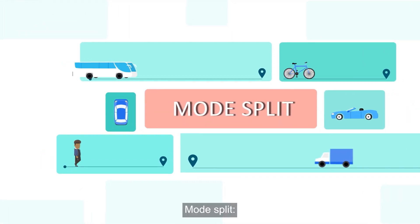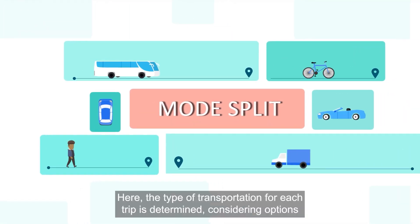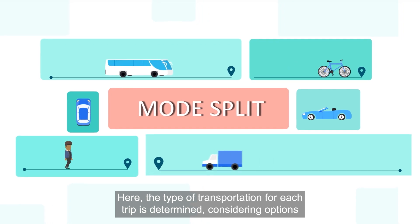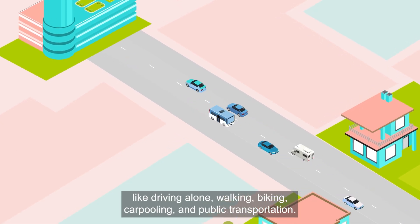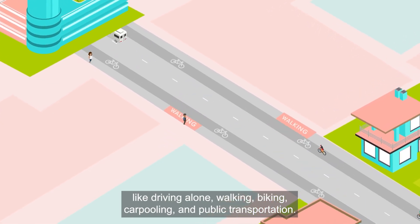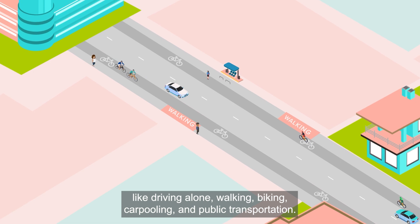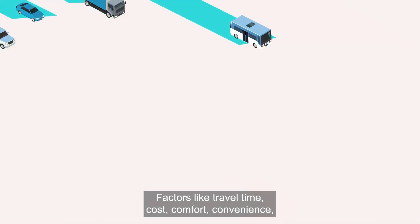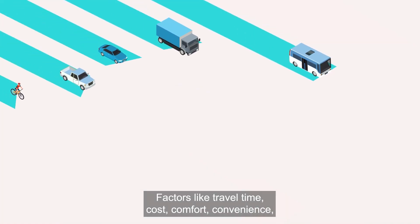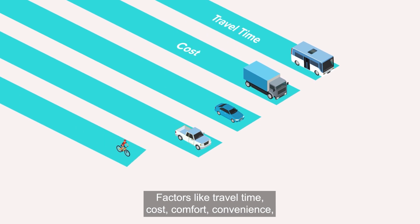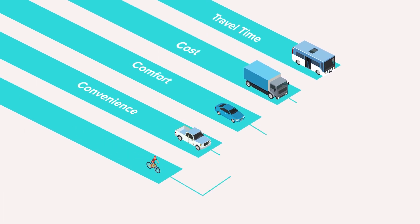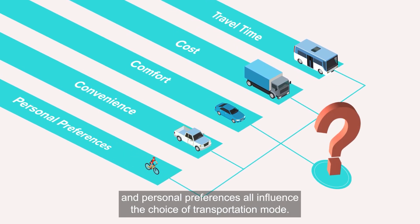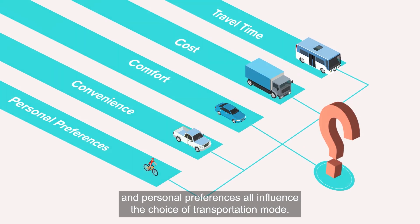Mode split: here, the type of transportation for each trip is determined, considering options like driving alone, walking, biking, carpooling, and public transportation. Factors like travel time, cost, comfort, convenience, and personal preferences all influence the choice of transportation mode.